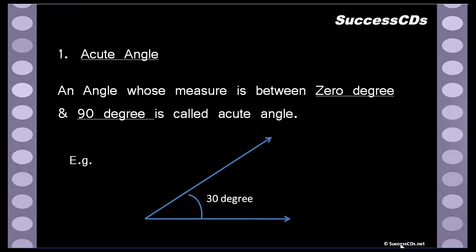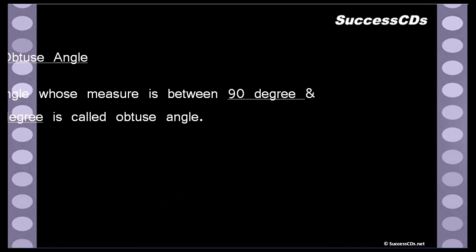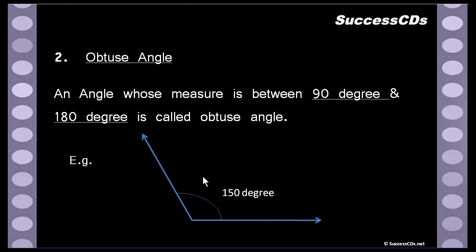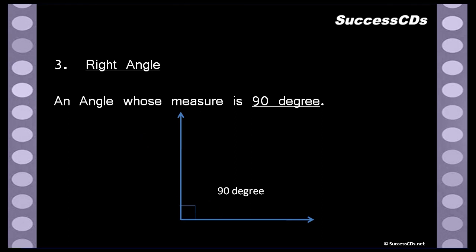Next we come to obtuse angle. An angle whose measure is between 90 degrees and 180 degrees is called an obtuse angle. For example, here the two arms of this angle are at an angle more than 90 degrees — it is 150 degrees. Therefore, 150 degrees is an obtuse angle.